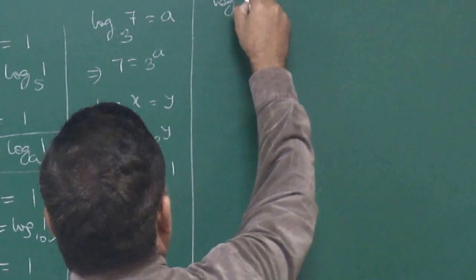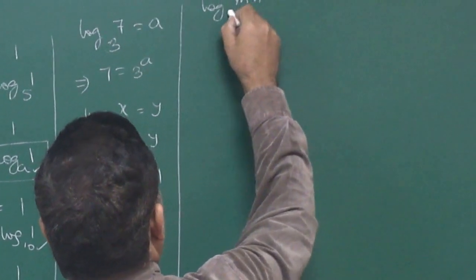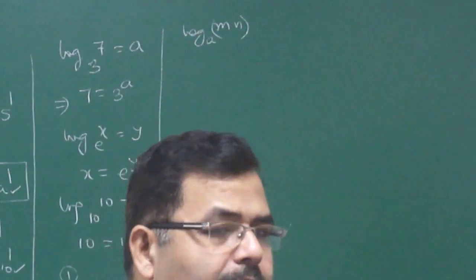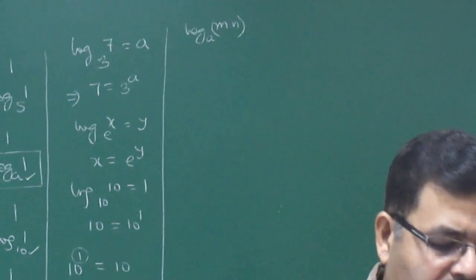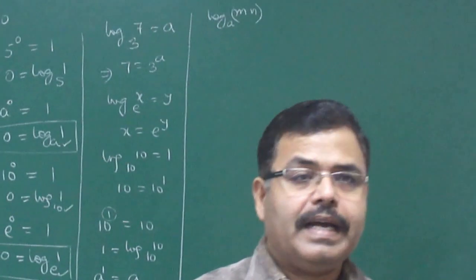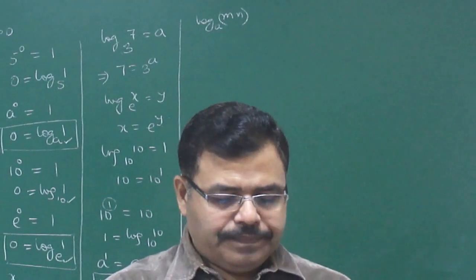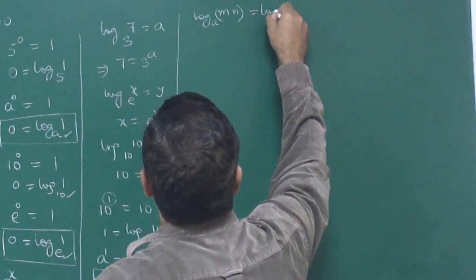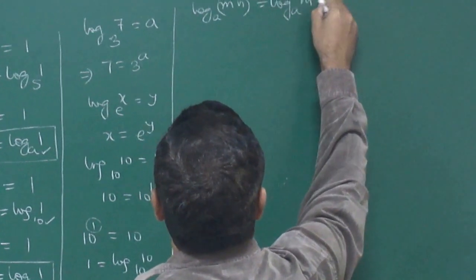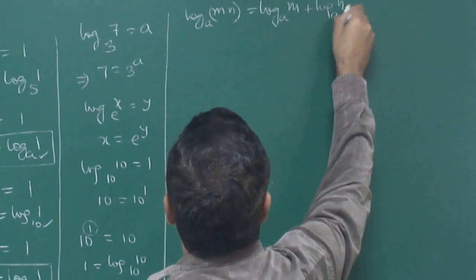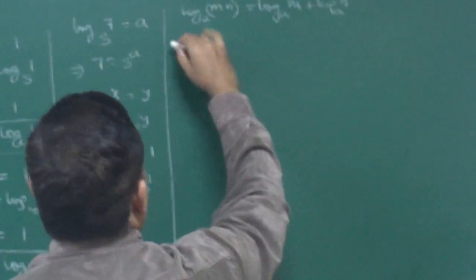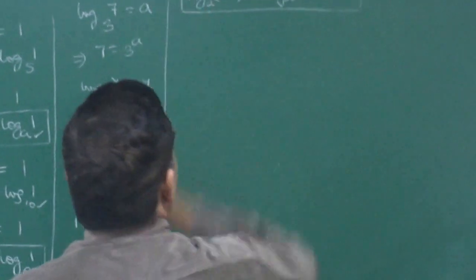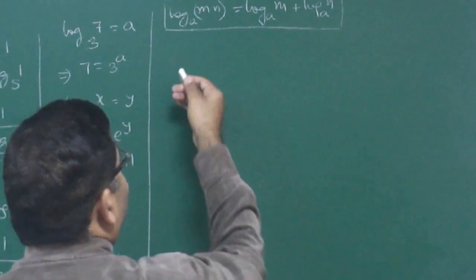Now let's look at basic properties of log. Log of m into n to the base a — if the argument is a product (multiply), what happens? When there is multiplication, it becomes addition: log(mn) to the base a equals log m to the base a plus log n to the base a. Whatever the base, this will hold. But why does this happen?